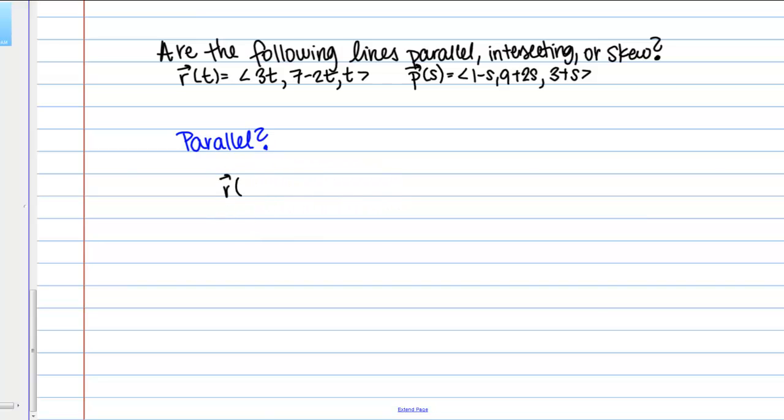I'm going to start with my line R(t) and I'm just going to break it down so that it lines up with this form of the line. I kind of want to extract the t parts from just the constant parts. If I do that, I've got 3t, 7 - 2t, and then t.